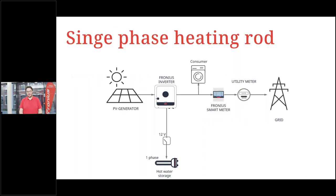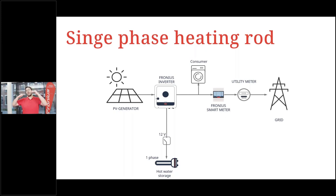Here's an example with a single-phase heating rod placed in the hot water storage, with a 12-volt relay controlling it. The PV generator creates a surplus, and after a set threshold level is reached, the relay closes and the heating rod switches on at full power. If the surplus drops below a certain limit, the heating rod switches off again.